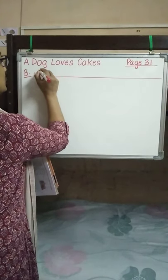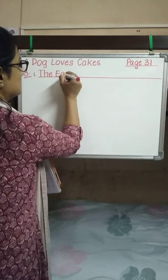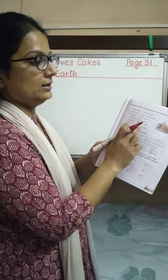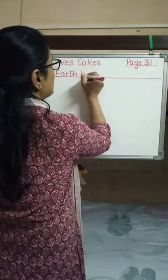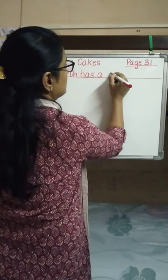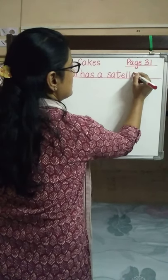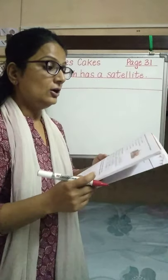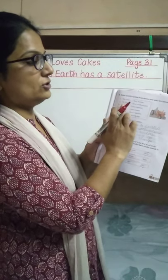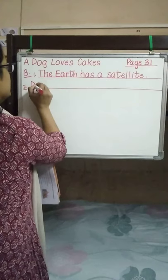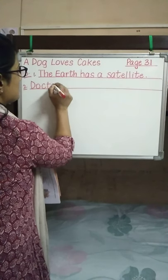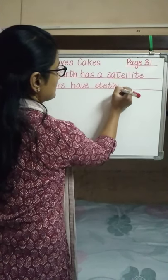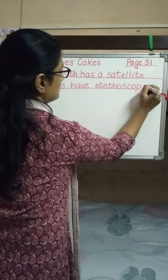So for 'the earth' — what will you write along with it? The earth has a satellite. Next, doctors. What goes along with doctors? Doctors have stethoscopes. So we are going to write it like this: Doctors have stethoscopes.